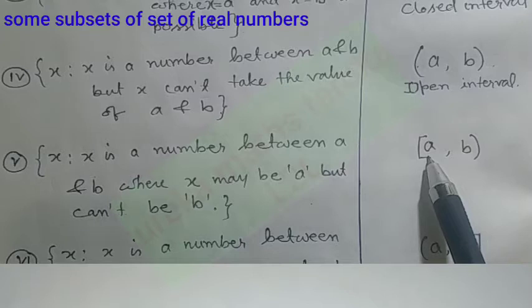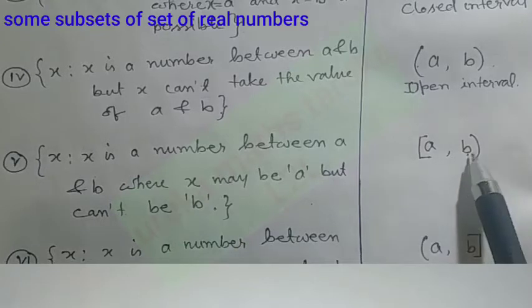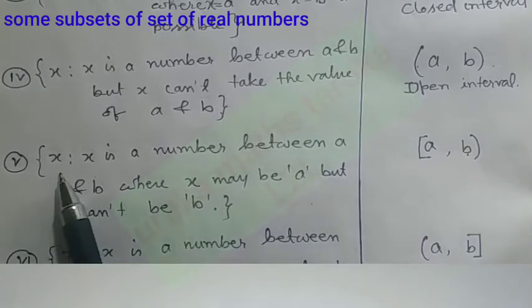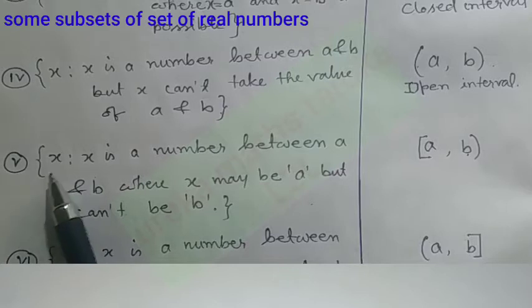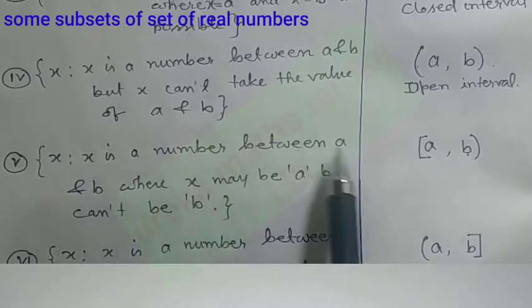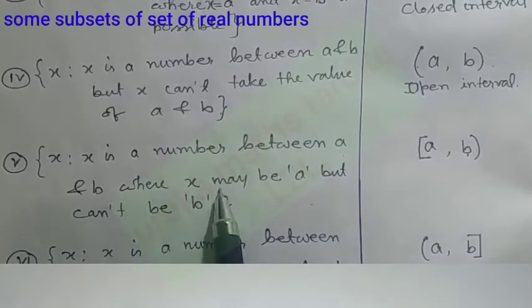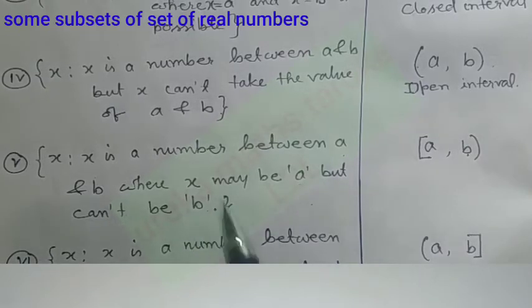When a is included but b is excluded, in set builder format we write: x such that x is a number between a and b, where x may be a, but x cannot be b.